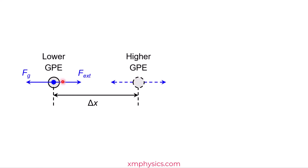The external force has done positive work. As a result, the mass gained GPE. So we can write this down. I'm using U to represent GPE. So the increase in GPE is equal to the positive work done by the external force.